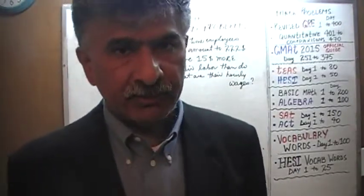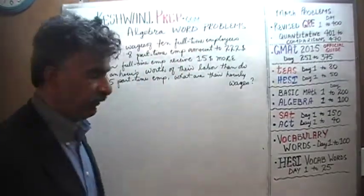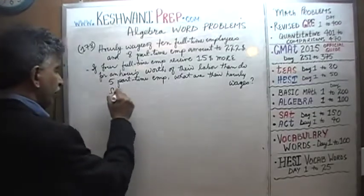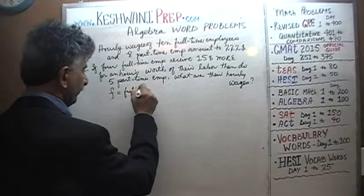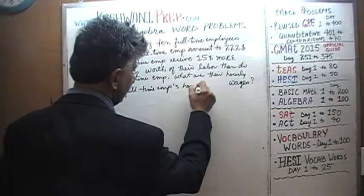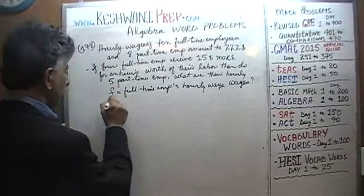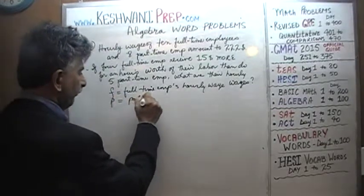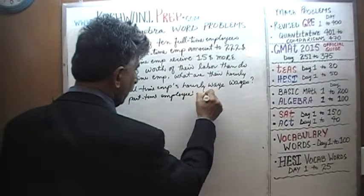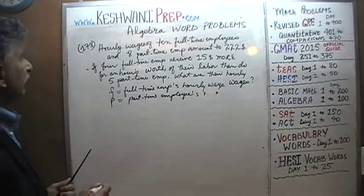As always in any algebra word problem, the very first thing we need to do is define our variables clearly. We have full-time people and part-time people. We're going to use the letter F to represent the hourly wage of full-time employees, and similarly we're going to use the letter P to represent the hourly wage of part-time employees.